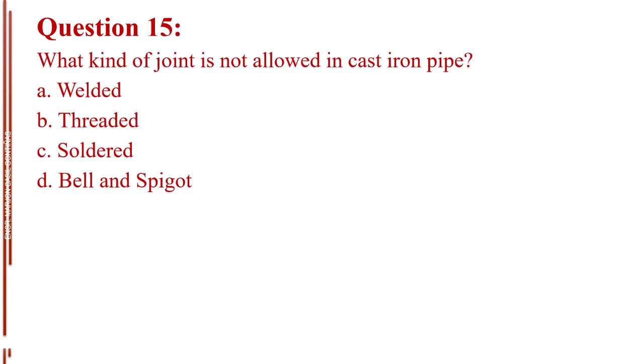Question number 15. What kind of joint is not allowed in cast iron pipe? Letter A, welded. Letter B, threaded. Letter C, soldered. Letter D, bell and spigot. The answer is Letter B, threaded.